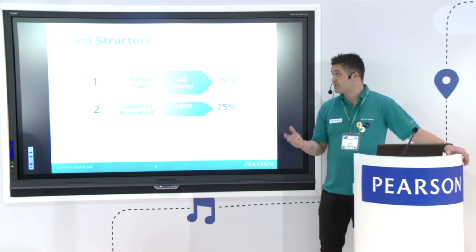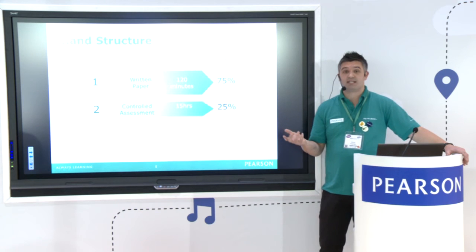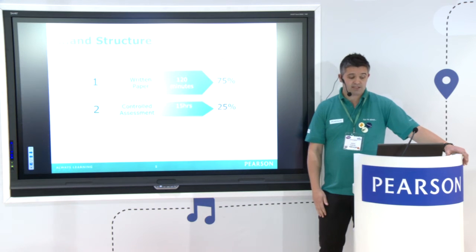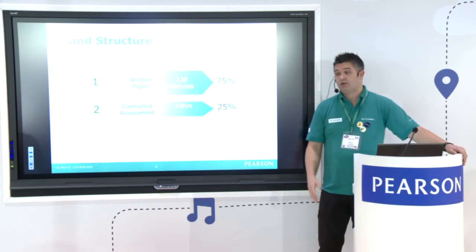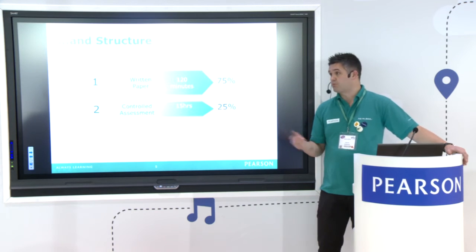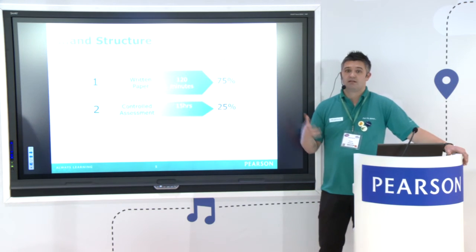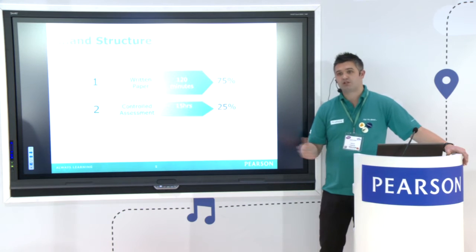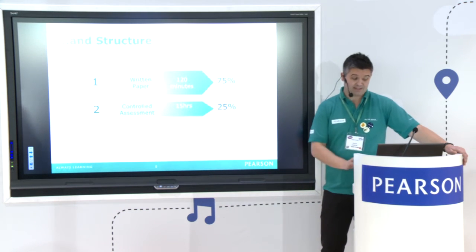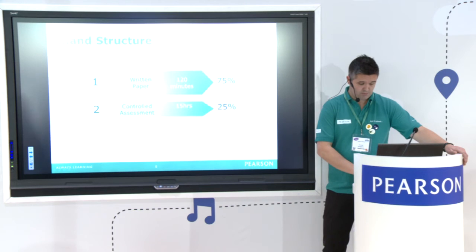Finally, it's worth mentioning that GCSE computer science is part of the EBacc and will count as an EBacc measure in secondary school performance tables. So if a student is studying three sciences along with computer science, the computer science plus biology will mean they meet the science requirement of the EBacc — and that's a very important measure for schools.